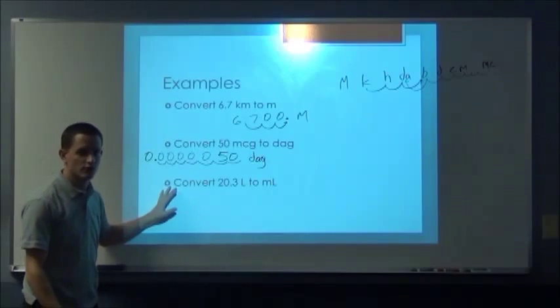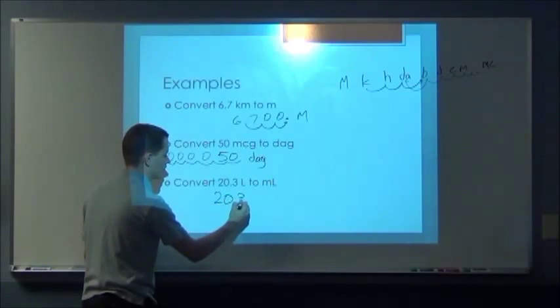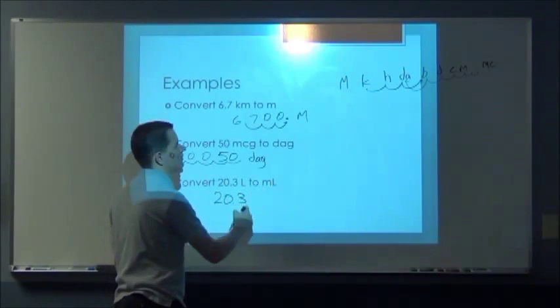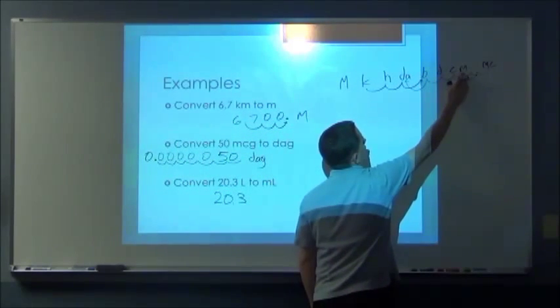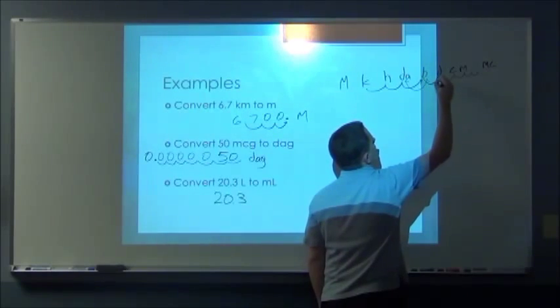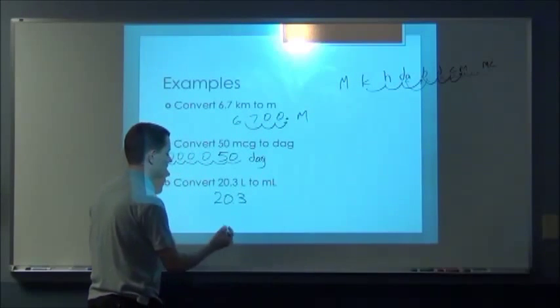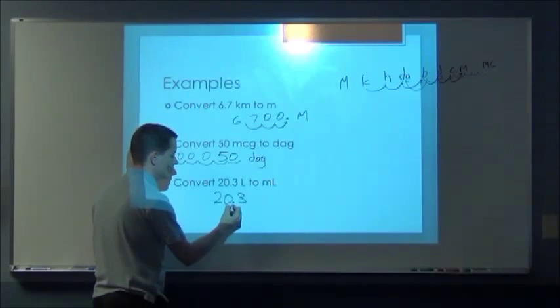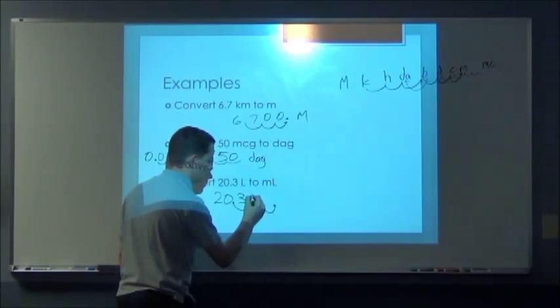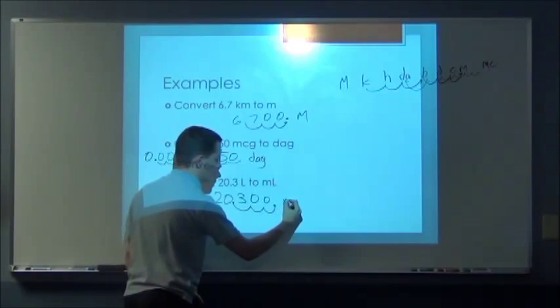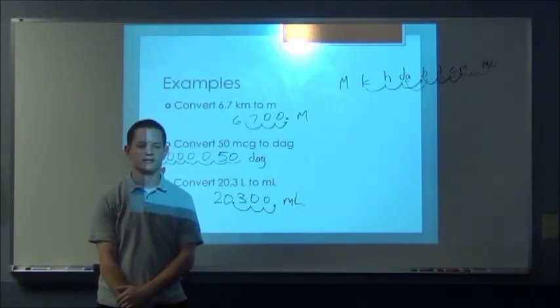Now for the last one, I'm just going to write it. You're converting from liters to milliliters. So liters is your base and you're converting it to milliliters so it's three places. Move the decimal place over three times: 1, 2, 3. And don't forget your units, which is milliliters. And that's it.